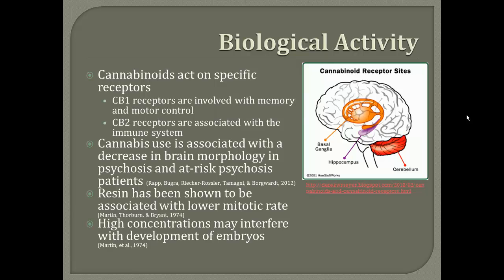One study looked at structural MRI and post-mortem examinations. The in vivo studies show that cannabis use is associated with a decrease in brain morphology. This occurred most in areas that had high levels of CB1 receptors and in patients who had a history of mental illness. One in vitro study showed that resin has been associated with a lower mitotic rate, but since the in vivo cells did not show mitotic inhibition, it's not completely confirmed. However, high concentrations may interfere with the development of embryos if the drug works to pass through the placenta.